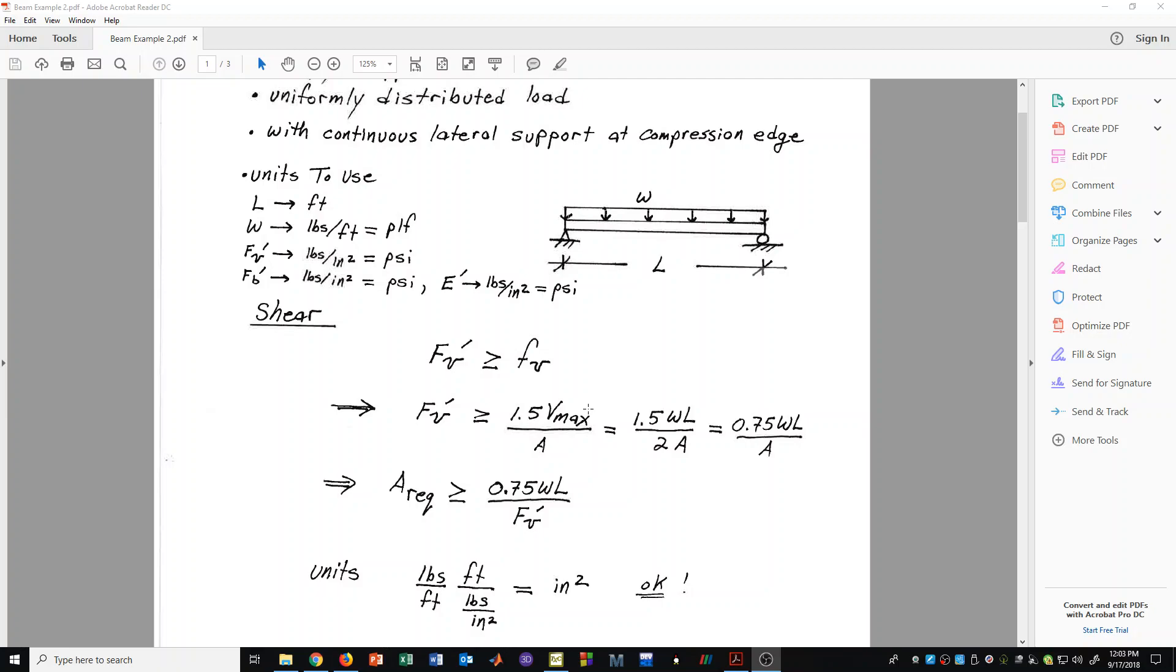We want to find the actual stress in this beam at the cross-section where the shear is maximum, because that will be causing the worst shear stress anywhere along the length of the beam. For a rectangular cross-section, that actual shear stress will be 1.5 times Vmax over the cross-sectional area. Since this is a uniformly loaded, simply supported beam, the maximum shear Vmax will be equal to WL over 2. We can simplify this formula further and we get 0.75 WL over A.